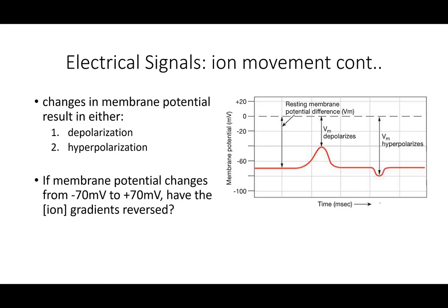The resting membrane potential is around -70 millivolts and can change depending on whether ions are moving into or out of the cell. If sodium moves in from the extracellular fluid, we have depolarization — the membrane potential becomes more positive, less negative. If chloride enters the cell or potassium leaves, we get hyperpolarization — we move further away and become more negative.